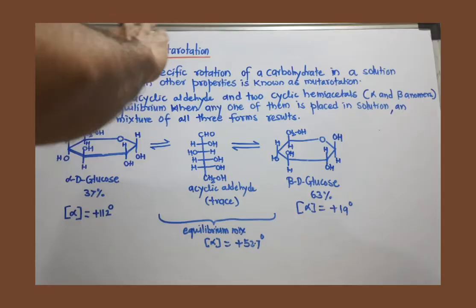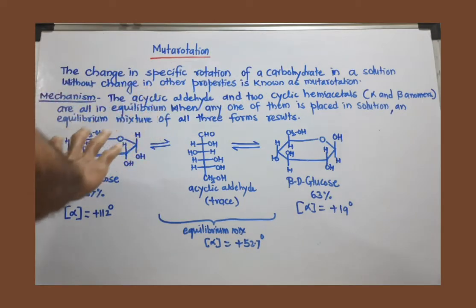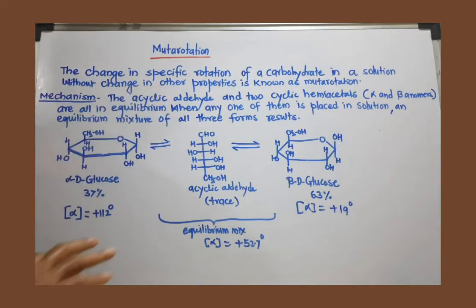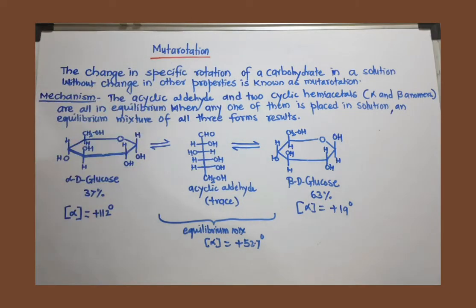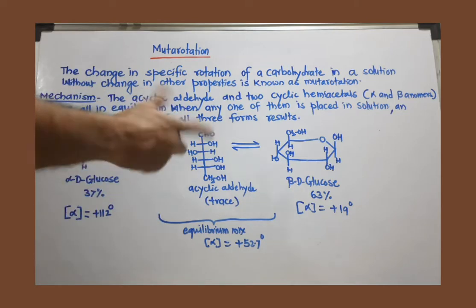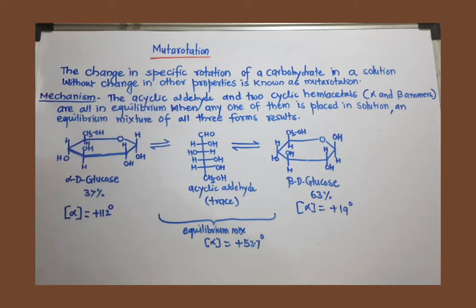Rotation of plane-polarized light. If the compound is optically active, it can rotate the plane of plane-polarized light either toward the right or left by a certain angle, and from that we can calculate specific rotation. Since glucose has four chiral carbons, it is optically active and can rotate the plane of plane-polarized light, meaning it has a certain value of specific rotation. That much information is sufficient.